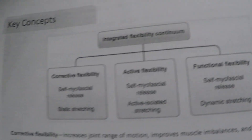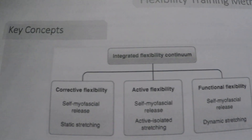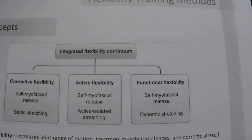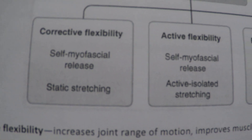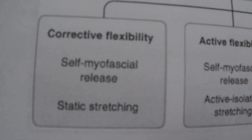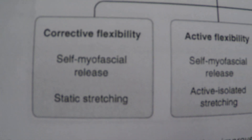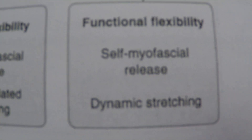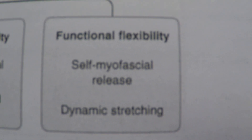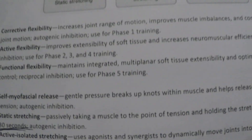Reassessment is triggered every four weeks, when the client identifies new goals, or when the client has major lifestyle changes. You need to know the integrated flexibility continuum and which part of the OPT model each stage fits into - stage one, stage two, and stage three.